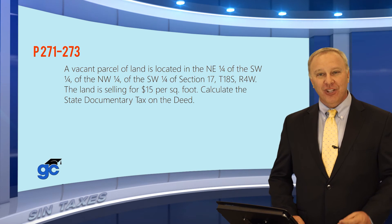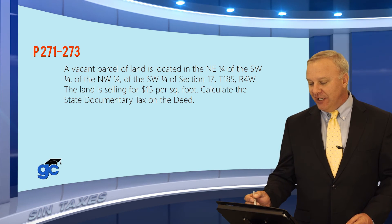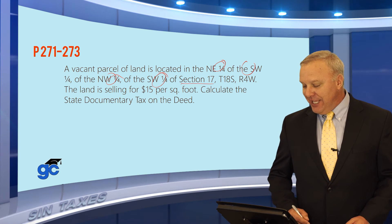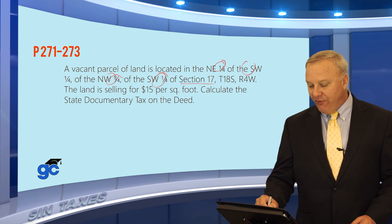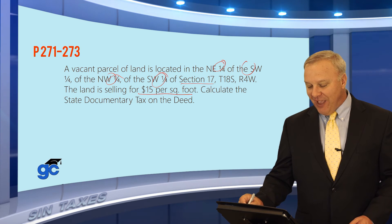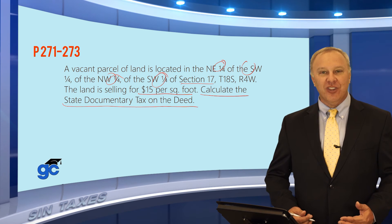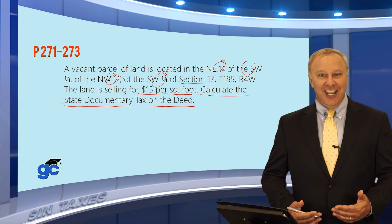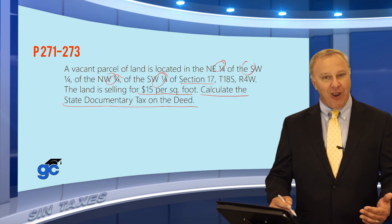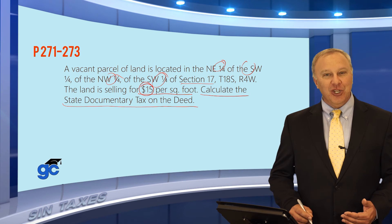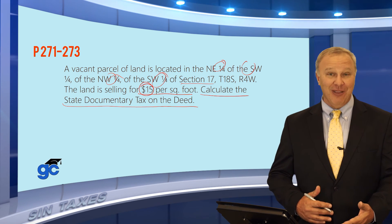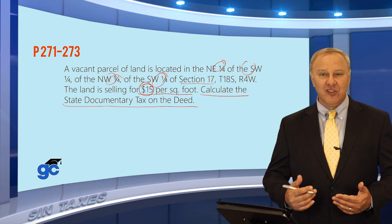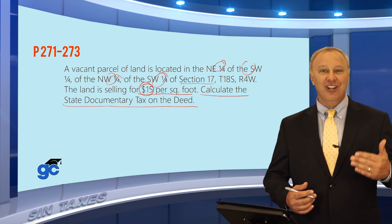One more doc stamp question: a vacant parcel of land is located in the northeast quarter of the southwest quarter of the northwest quarter of the southwest quarter of Section 17, Township 18 South, Range 4 West. The land is selling for $15 per square foot. Calculate the state doc stamp tax on the deed. This is an application-oriented question combining several concepts — you need to find the property size, multiply by price per square foot to get the sales price, then calculate the doc stamp tax.